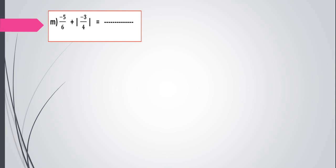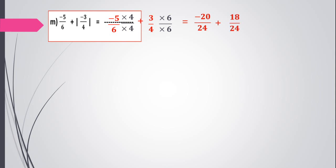Negative 5 over 6 plus the absolute value of negative 3 over 4. First, the absolute value of negative 3 over 4 is 3 over 4. Now we must make the denominators equal: multiply the first number by 4 and the second number up and down by 6. It becomes negative 20 over 24 plus 18 over 24. Same denominators and different signs, so subtract and take the sign of the bigger number, which is negative. 20 minus 18 equals 2 over 24. Not in simplest form, so divide by 2, giving negative 1 over 12.